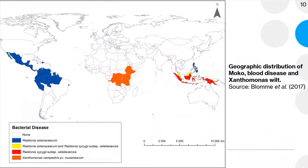The geographic distribution of bacterial wilt disease of banana is quite similar to that of FOC. The disease mainly exists in tropical and subtropical areas. However, each disease is restricted to confined regions. Moko disease is found in Central and South America, the Philippines, and Malaysia. Xanthomonas wilt is found in East and Central Africa. Blood disease is currently affecting banana, especially ABB genome type, in Southeast Asia including Indonesia, Malaysia, and New Guinea.